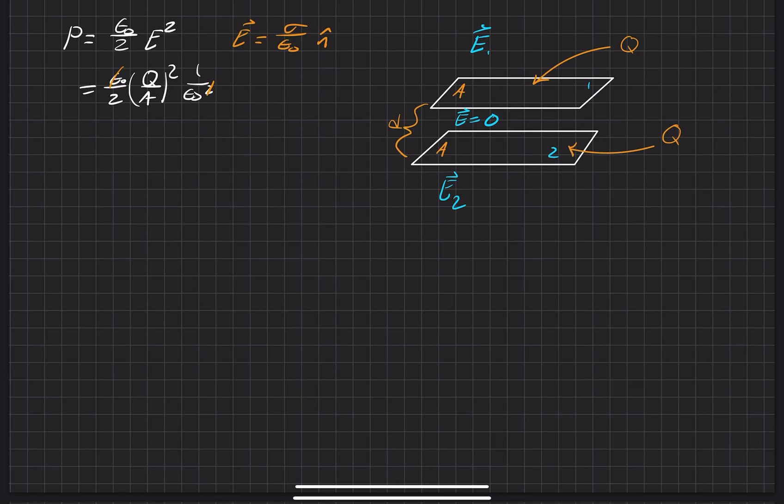We take that out and arrive at our final answer for one of those regions: 1 over 2 epsilon naught times Q over A squared.